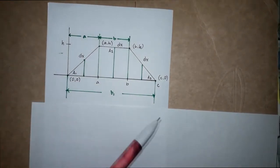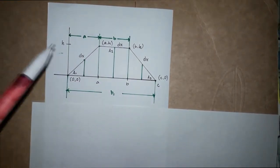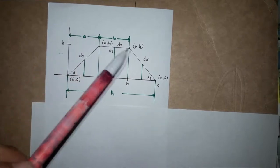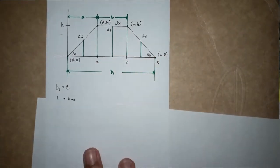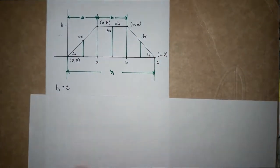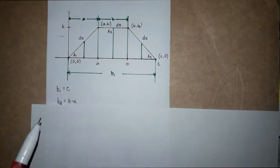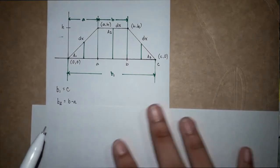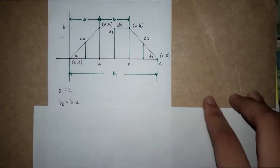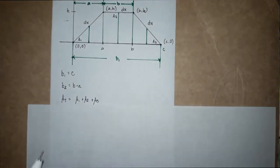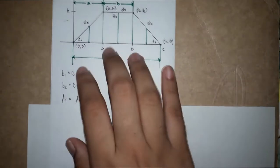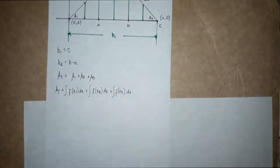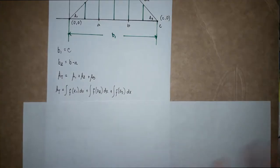This is b1 and this is b2, so b1 is equal to c while b2 is equal to b minus a. The total area is equal to A1 plus A2 plus A3.